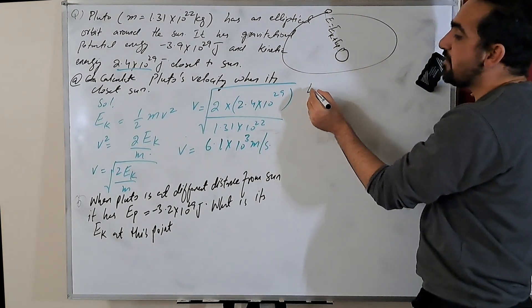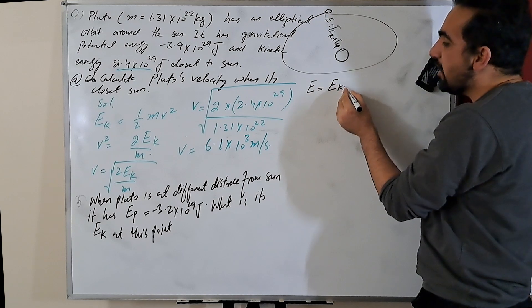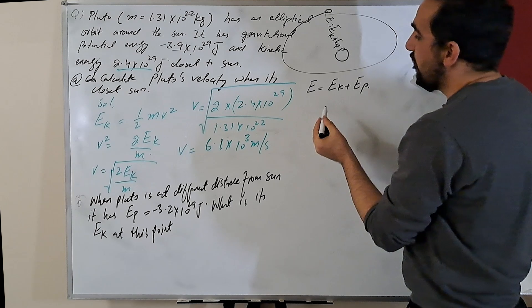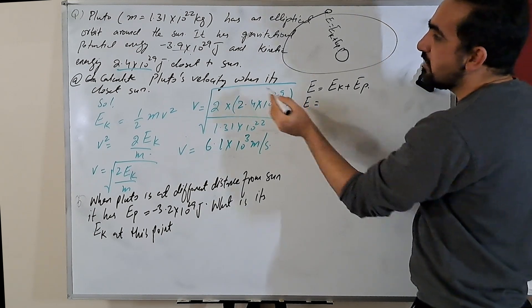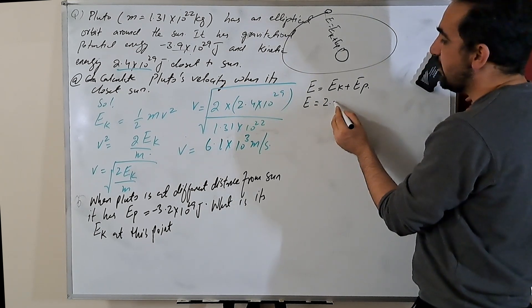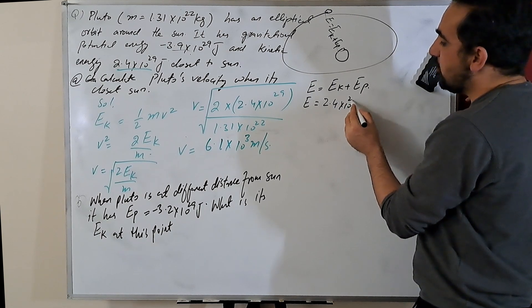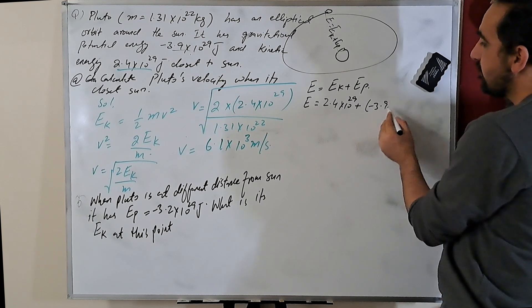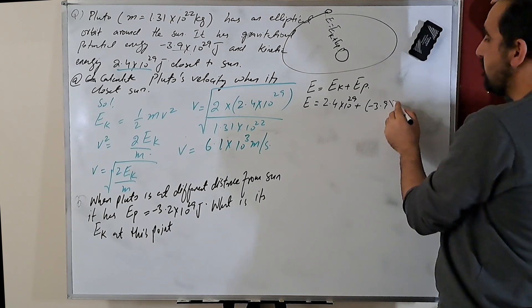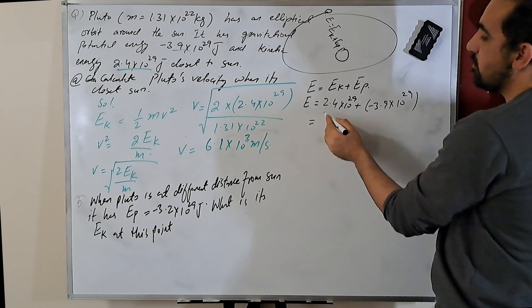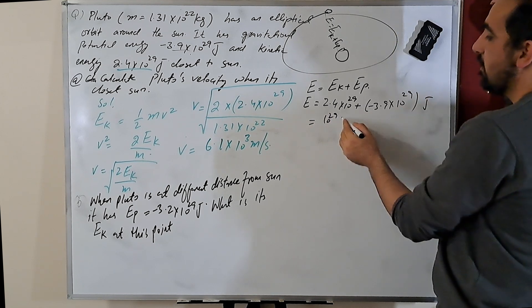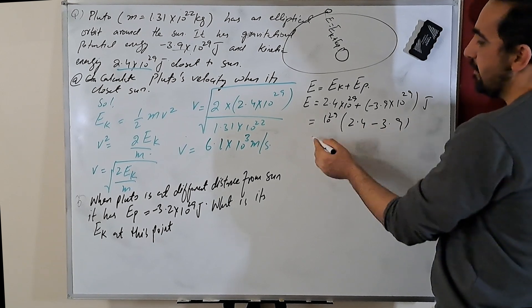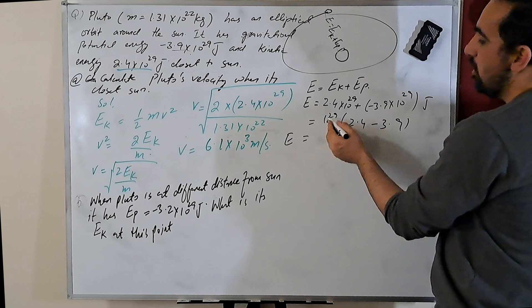The rule that total energy equals E-k plus E-p remains constant. We can find the total energy from the closest point: total energy equals kinetic energy at closest point, 2.4 × 10²⁹, plus potential energy, minus 3.9 × 10²⁹. Taking 10²⁹ common, we get 2.4 minus 3.9.